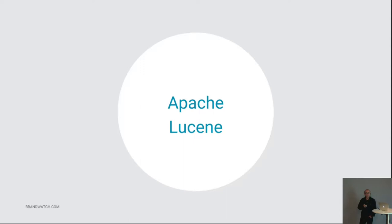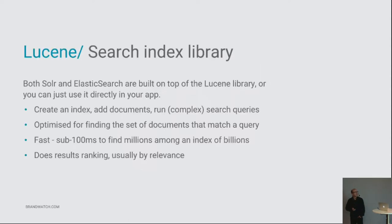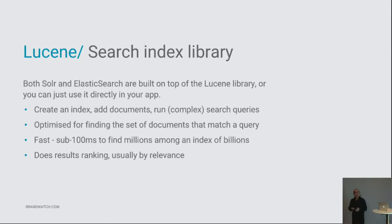Lucene is an Apache open source project in Java. It's been ported to .NET but I don't know how active that is anymore. It's a search index library and probably one of the most popular libraries for this kind of work. Anyone doing open source work is almost certainly going to be using Lucene for full text indexing. Twitter, Yahoo, and LinkedIn use it a lot. Facebook and Google almost certainly don't.